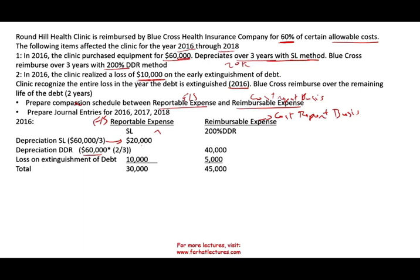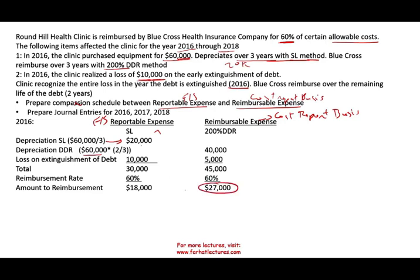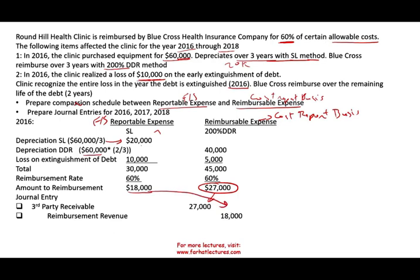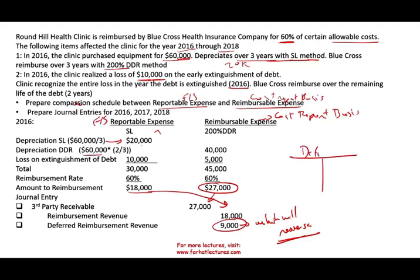Times 60%, that's the reimbursement rate. The amount to be reimbursed is $27,000, and the revenue for the reportable expenses will be $18,000. So we debit receivable $27,000 and credit revenue $18,000. Because we incur expenses of $18,000, that expense becomes revenue because they're reimbursing it. The difference between those two is a temporary difference of $9,000, which will reverse. So if you want to create a T-account for deferred revenue, put $9,000 there — you will see over 2017 and 2018 that this deferred revenue will reverse.